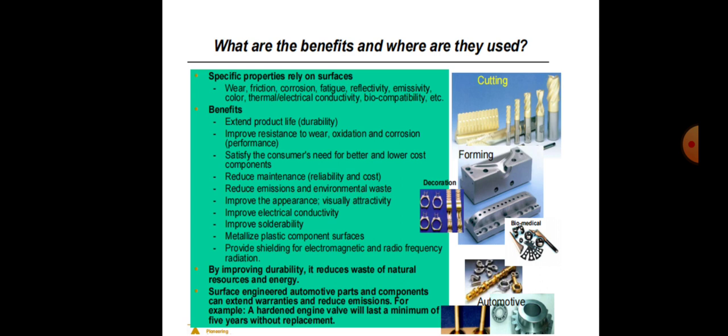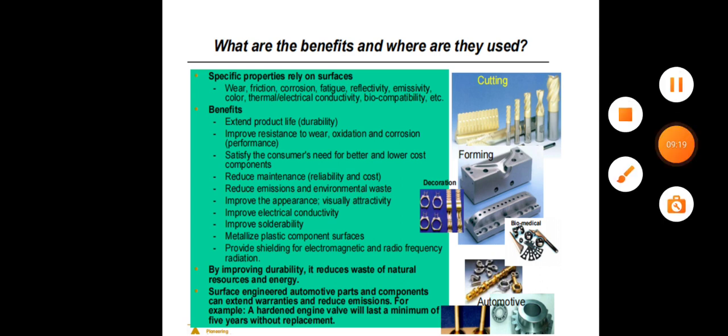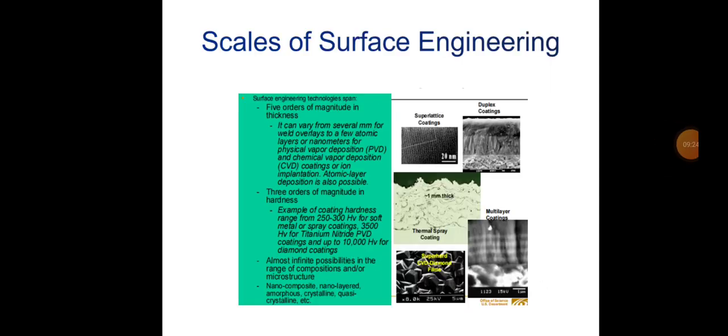Further benefits include satisfying consumer needs for better, lower-cost components; reducing maintenance and improving reliability; reducing emissions and environmental waste; improving appearance and attractivity; improving electrical conductivity and solderability; metallizing plastic component surfaces; and providing electromagnetic and radio frequency shielding. Surface engineering in automotive parts can extend warranties and reduce emissions — for example, hardened engine walls that last without replacement.